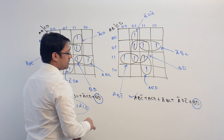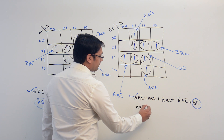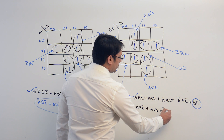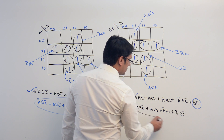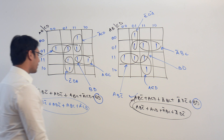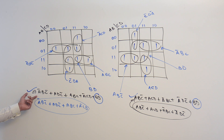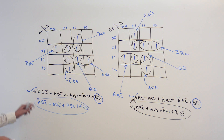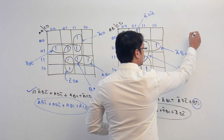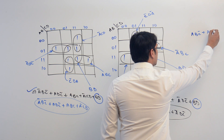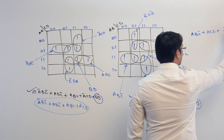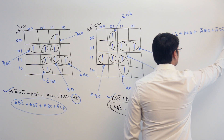Without BD also, we can represent the same function. If we write A, B, C complement plus A, C, D plus A complement, B, C plus A complement, D, C complement — this smaller equation is representing the same thing. So you can take this equation and minimize it. Let me take one of the equations and try to eliminate BD from it. This one is: A, B, C complement plus A, C, D plus A complement, B, C plus A complement, D, C complement plus BD.